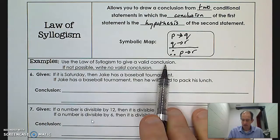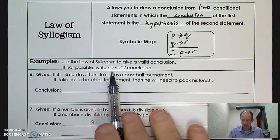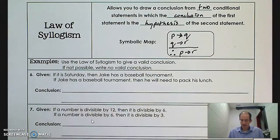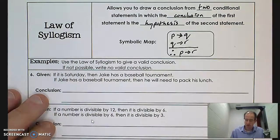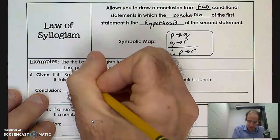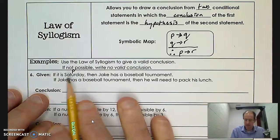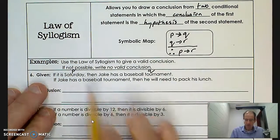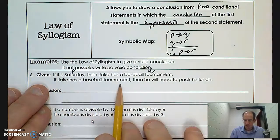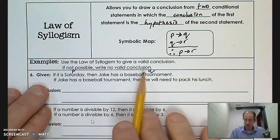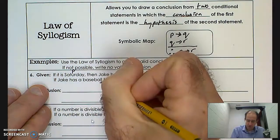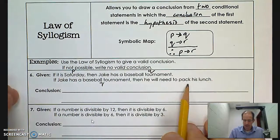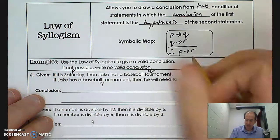Use the law of syllogism to give a valid conclusion; if not possible, write no valid conclusion. Question six: if it is Saturday, then Jake has a baseball tournament — that's p leading to q. If Jake has a baseball tournament, that matches q, then we will need to pack his lunch — that's r. So the law of syllogism applies here: if p then q, if q then r.